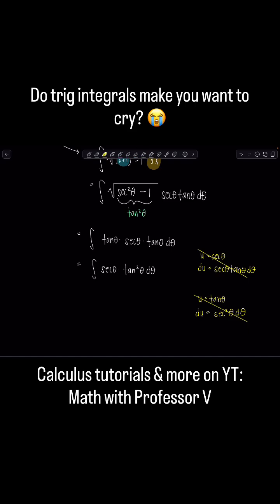So what do you do? Not cry. No, you go, okay, I still have one more trick up my sleeve. I can rewrite tangent squared theta as secant squared theta minus one.